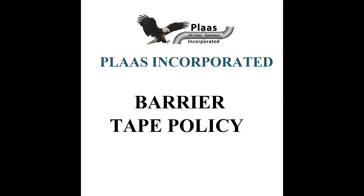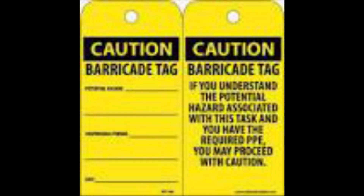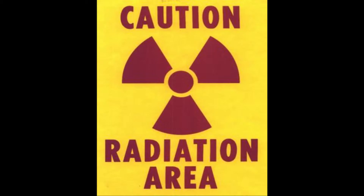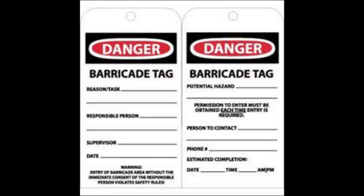Policy. A barrier tape shall be used to warn individuals where there is a potential for a hazardous condition or where there is a known hazard. Yellow or red barrier tape will be used to visually identify safety hazards. Radiation tape shall be used to visually identify radiation hazards. Employees and contractors are expected to understand the significance of the barrier tape color and the precautions to follow before crossing the barrier tape and entering the hazardous area.